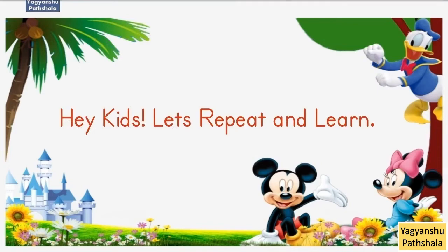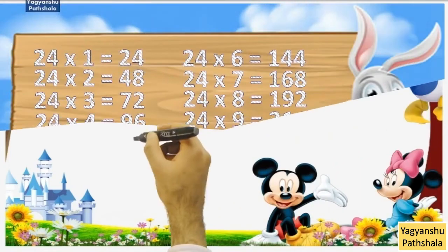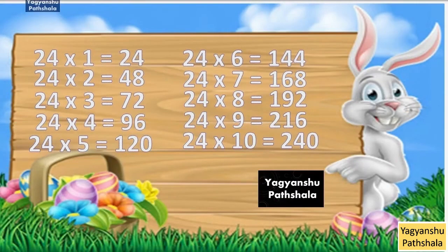Hey kids, let's repeat and learn. 24 1 Jaa 24. 24 2 Jaa 48. 24 3 Jaa 72. 24 4 Jaa 96. 24 5 Jaa 120. 24 6 Jaa 144. 24 7 Jaa 168. 24 8 Jaa 192. 24 9 Jaa 216. 24 10 Jaa 240.